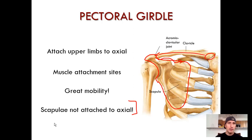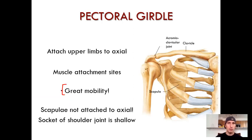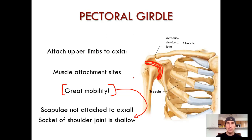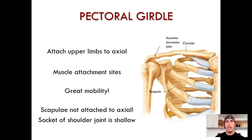Another reason you have great mobility in your pectoral girdle is because your glenohumeral joint — where your humerus sits in the glenoid cavity of the scapula — is relatively shallow. It's not a deep articulation, which would restrict movement. But that also means it's prone to popping out. Dislocated shoulders are far more common than a dislocated femur, for example.